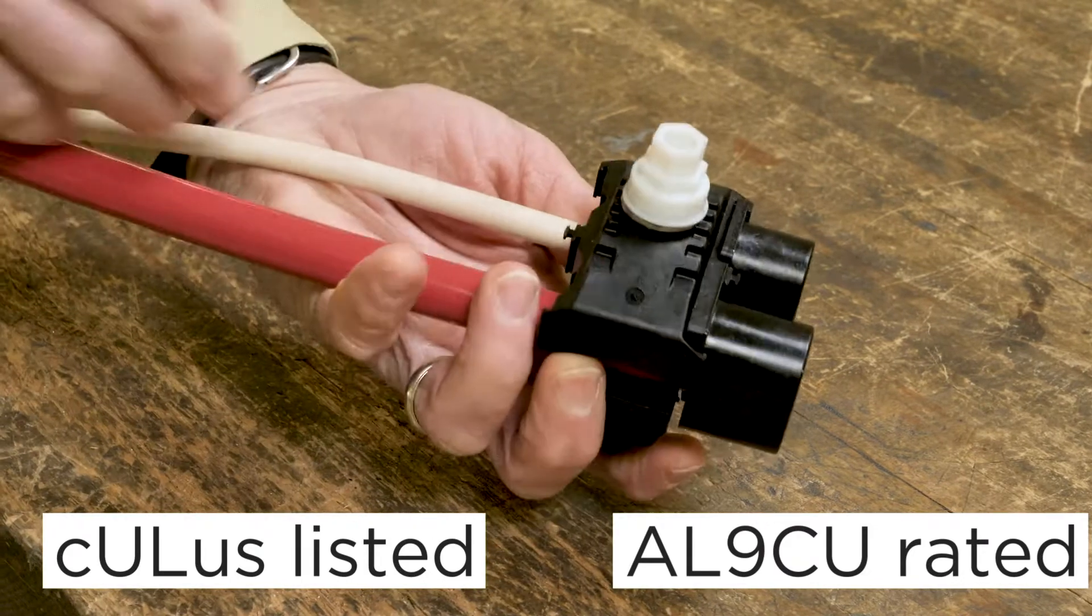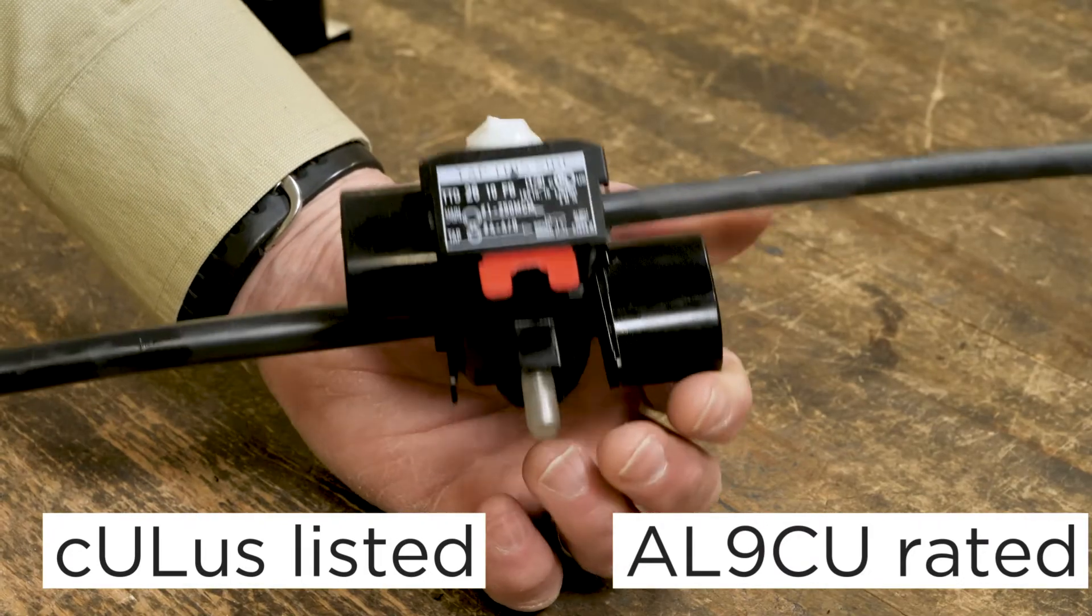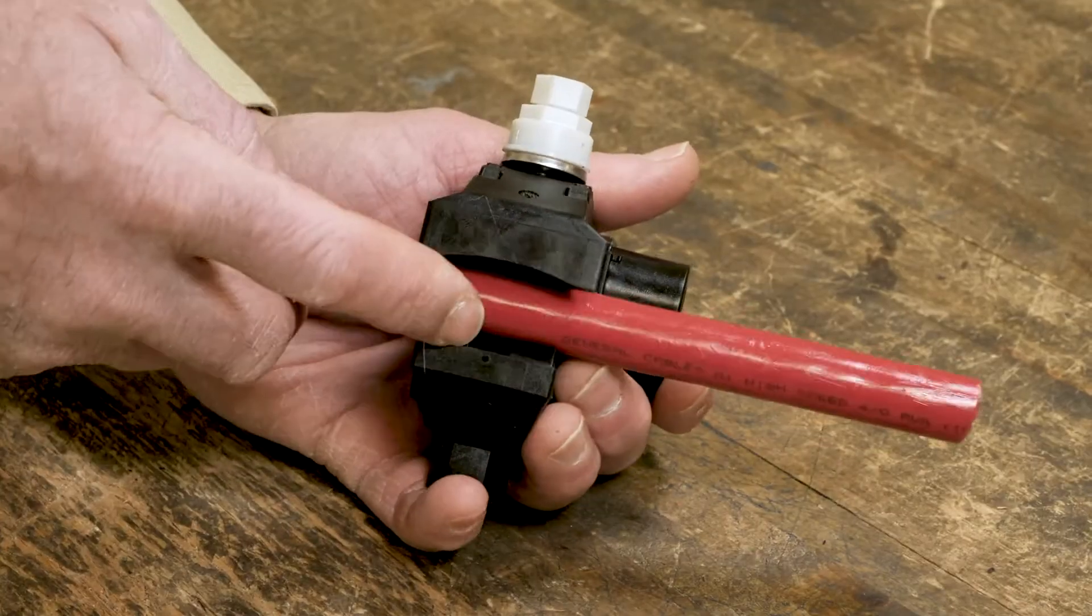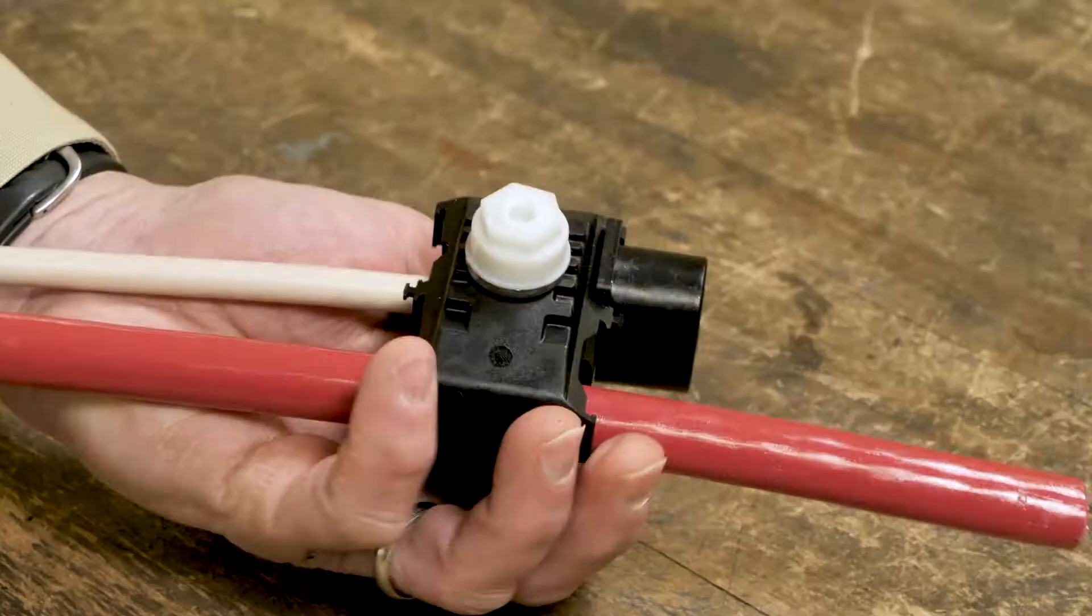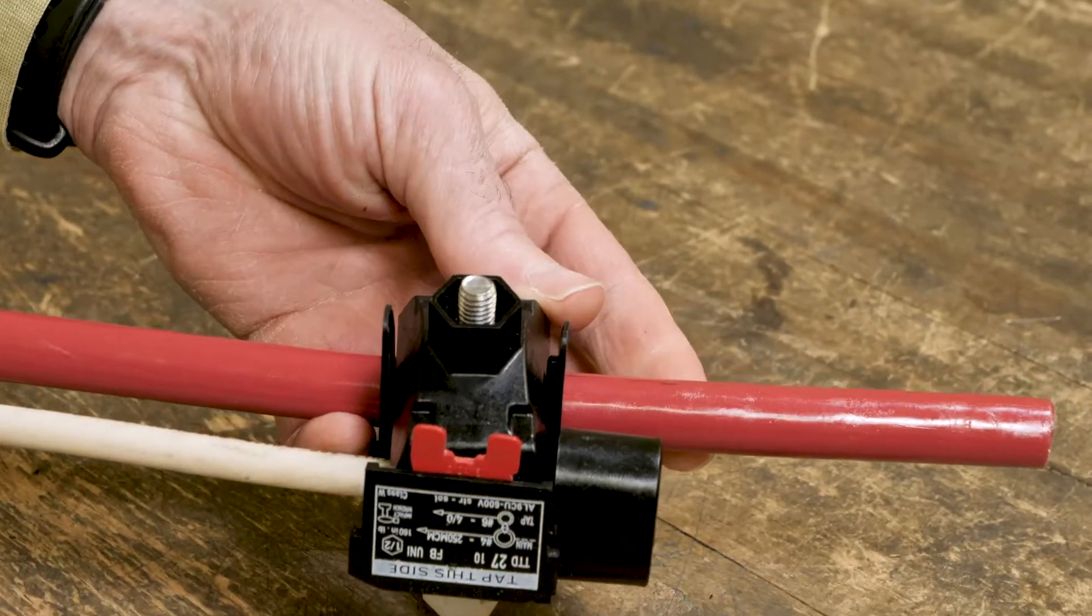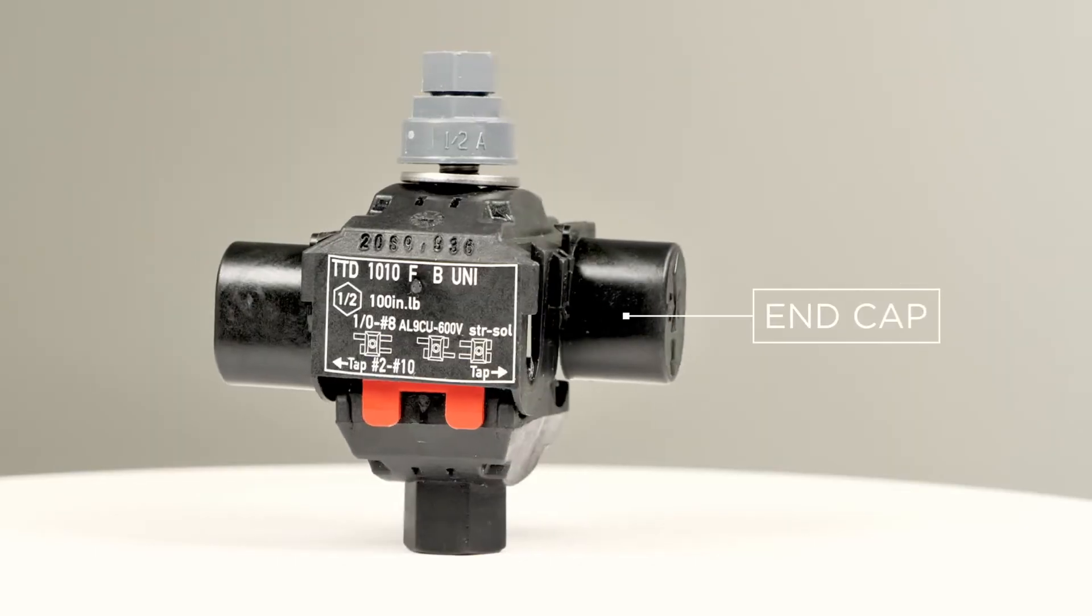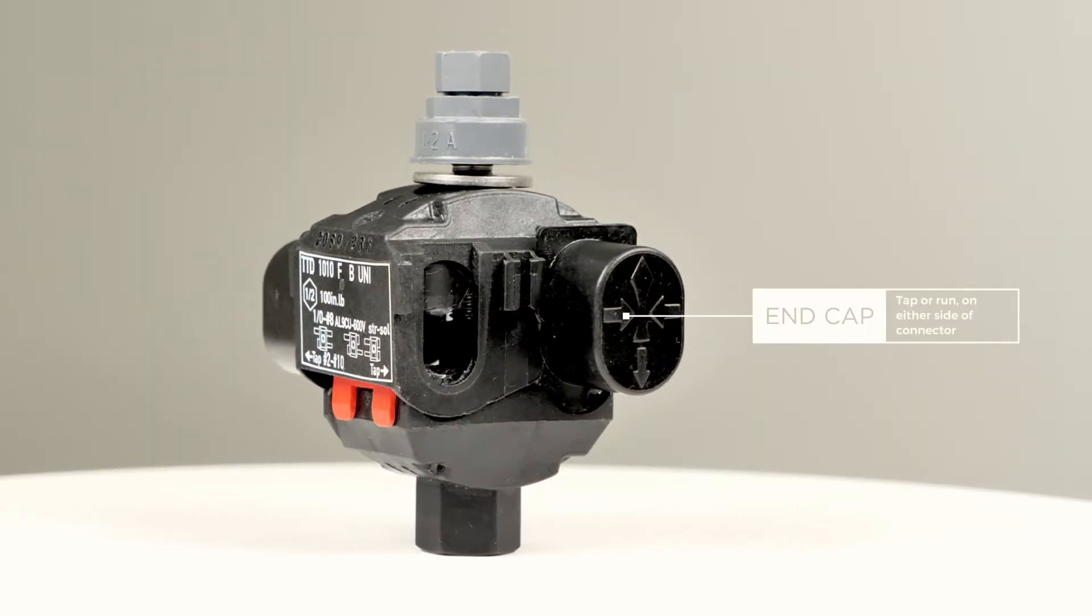Because they utilize insulation piercing technology, stripping insulation from conductor is not required and tapping applications can be completed without cutting the run conductor. Each BIPC connector is supplied with two end caps.